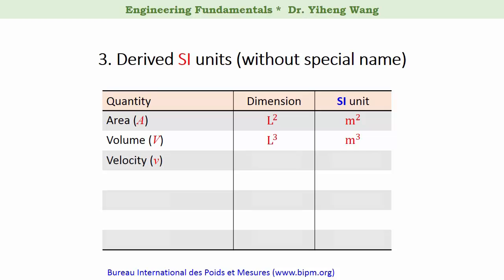For velocity, since velocity is length over time, therefore its SI unit is the combination of the base unit for length, meter, and the base unit for time, second: meter per second. Similarly, for acceleration, which is the time derivative of velocity, its SI unit is meter over squared second.